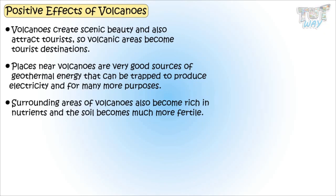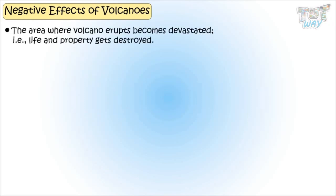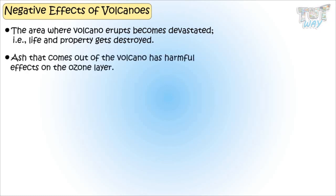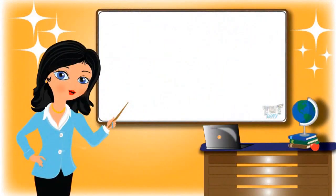Now let's learn some negative effects of volcanoes. The area where a volcano erupts becomes devastated — it destroys life and property. Ash that comes out of volcanoes has a very bad effect on the ozone layer. The previous landscape and natural beauty of the place is also destroyed. So kids, today we learned a lot about volcanoes. You may go ahead and take a quiz to learn more. Bye-bye!